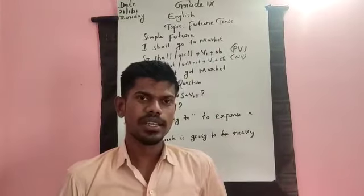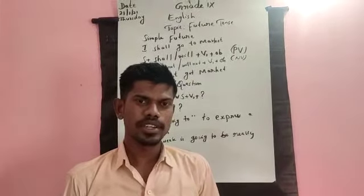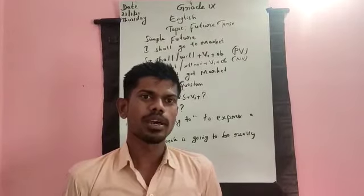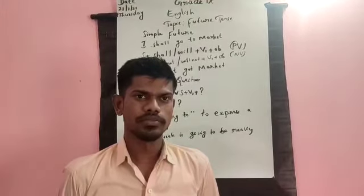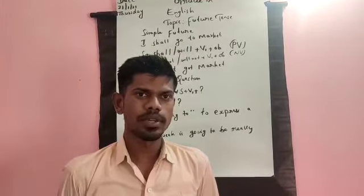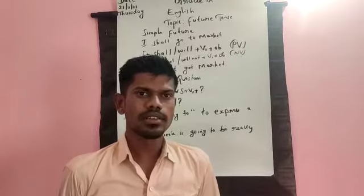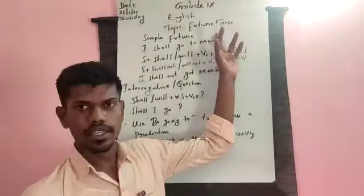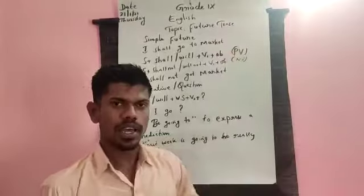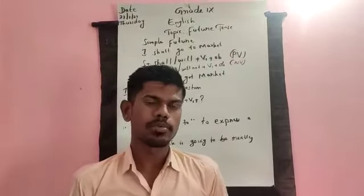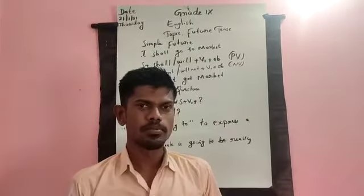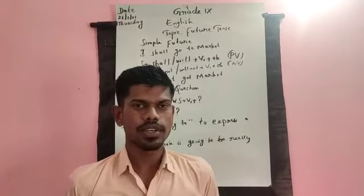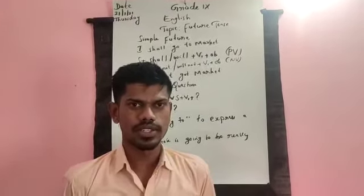What is future tense? Future tense is a tense which is used to express an action which is going to happen in the future — the action will happen later. This future tense will have four categories, just as present and past tenses: simple future, future continuous, future perfect, and future perfect continuous tense.